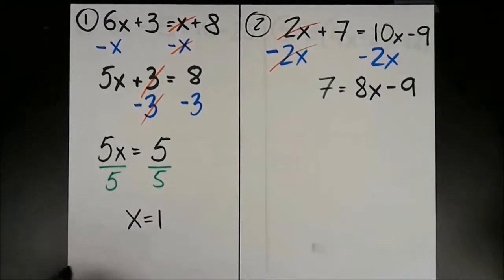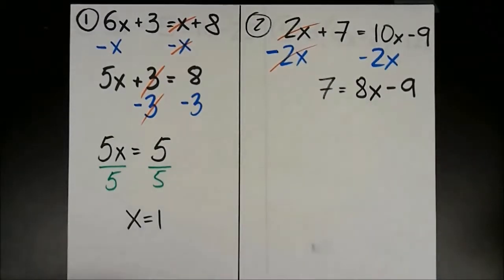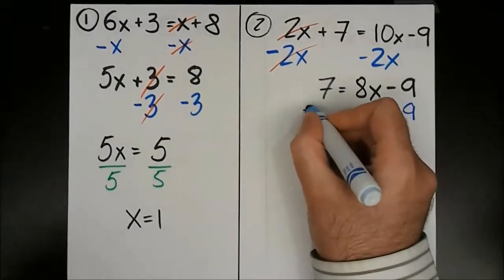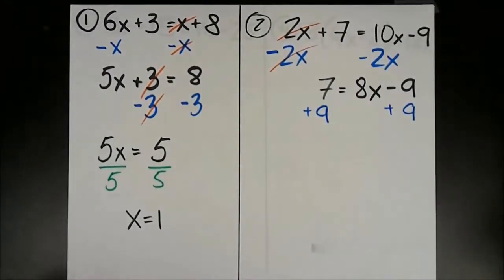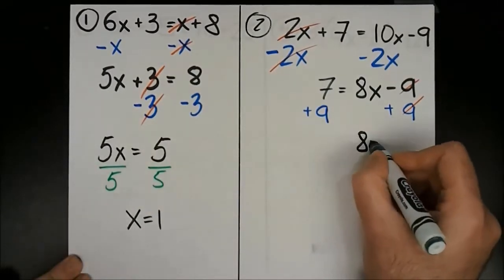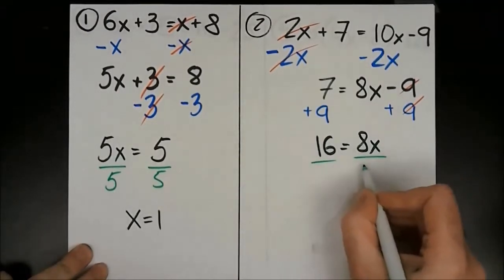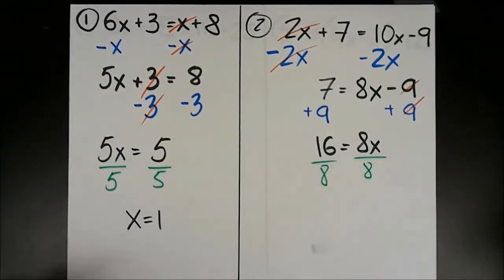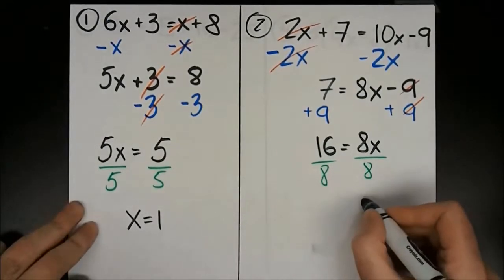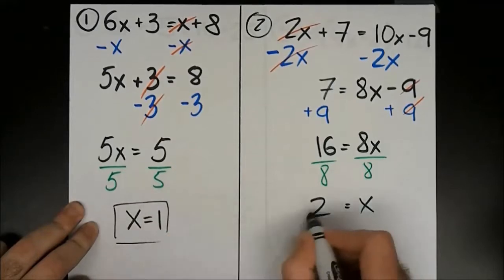Now it's a two-step equation and I want to isolate the 8x. I'm going to get rid of the minus 9 by adding 9 to both sides, which means those two are gone, and I get 8x equals 16. The last step: 8 is being multiplied by x, so I divide both sides by 8. 8 divided by 8 is 1, and 16 divided by 8 is 2. That is my answer.